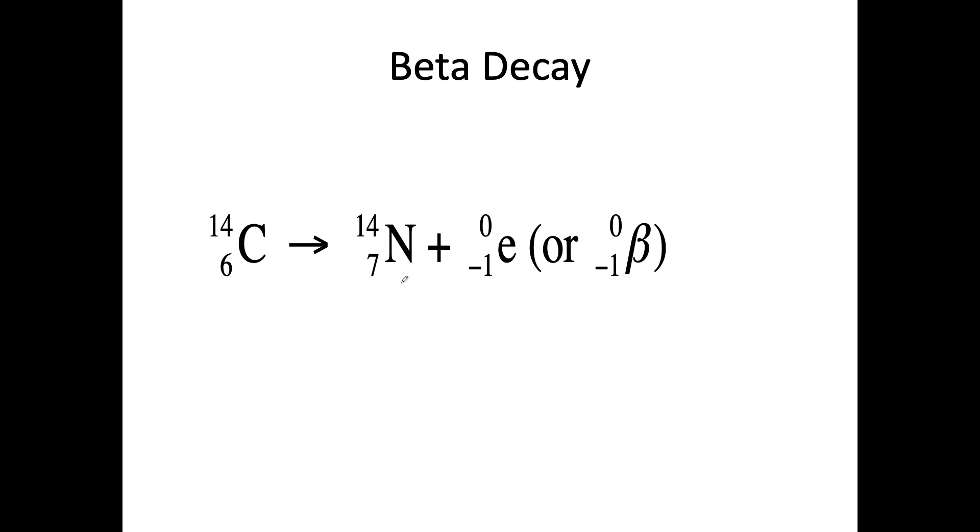Now, let's look at beta decay. Here we go. We've got carbon-14 decays, given off an electron, and we've got nitrogen-14. What happens is that the neutron becomes a proton plus an electron. And we see this inside the atom. And we have this decay, high energy electron being emitted. So this is what happens with the beta decay.